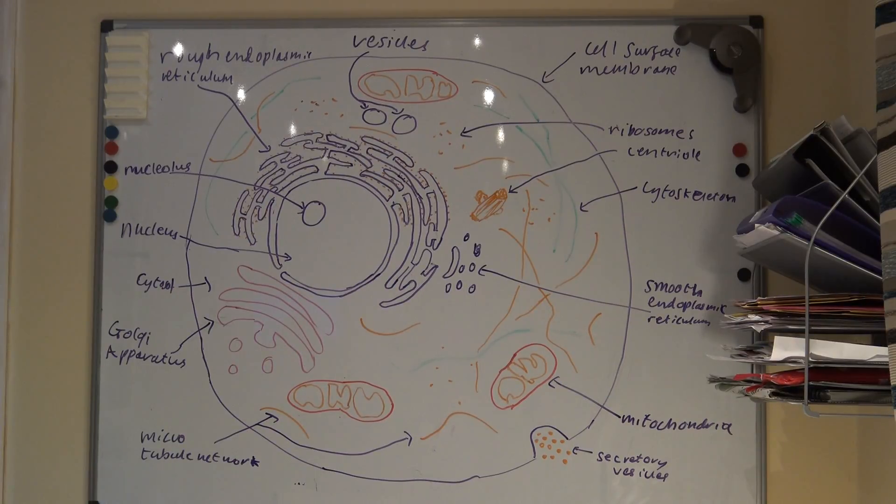The vesicles then fuse with the cis face of the Golgi apparatus and the proteins enter. The proteins are then structurally modified before leaving the Golgi apparatus from its trans face. These vesicles may be secretory vesicles which move towards and fuse to the cell surface membrane, releasing the proteins by exocytosis. Or they may be lysosomes which stay in the cell.